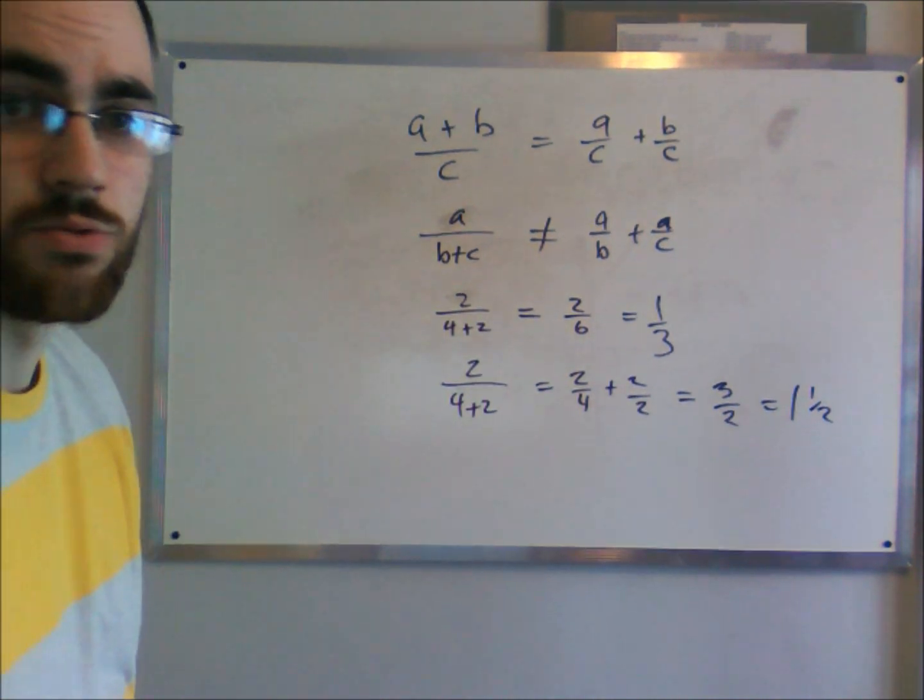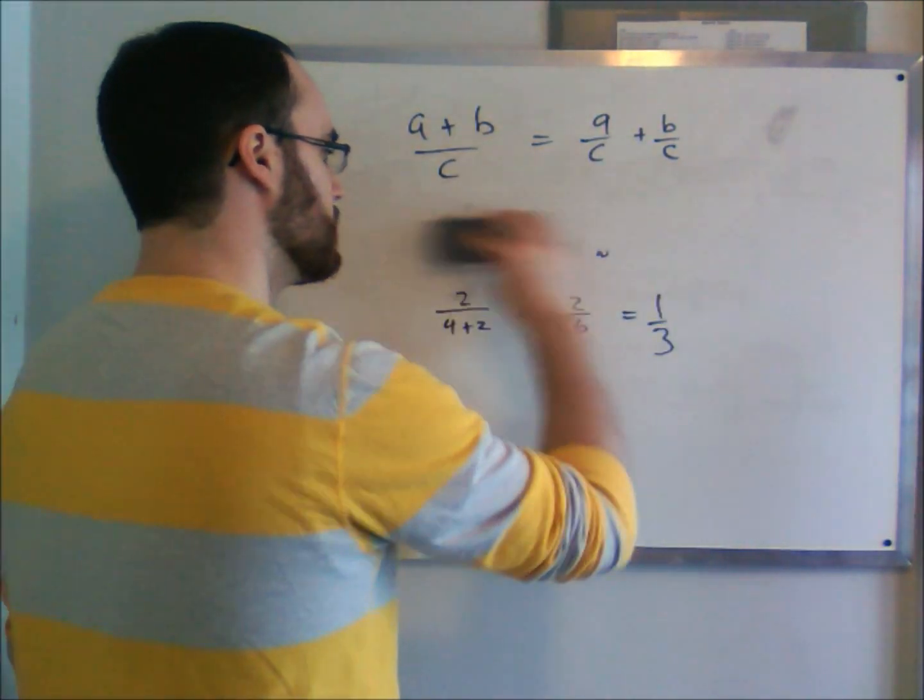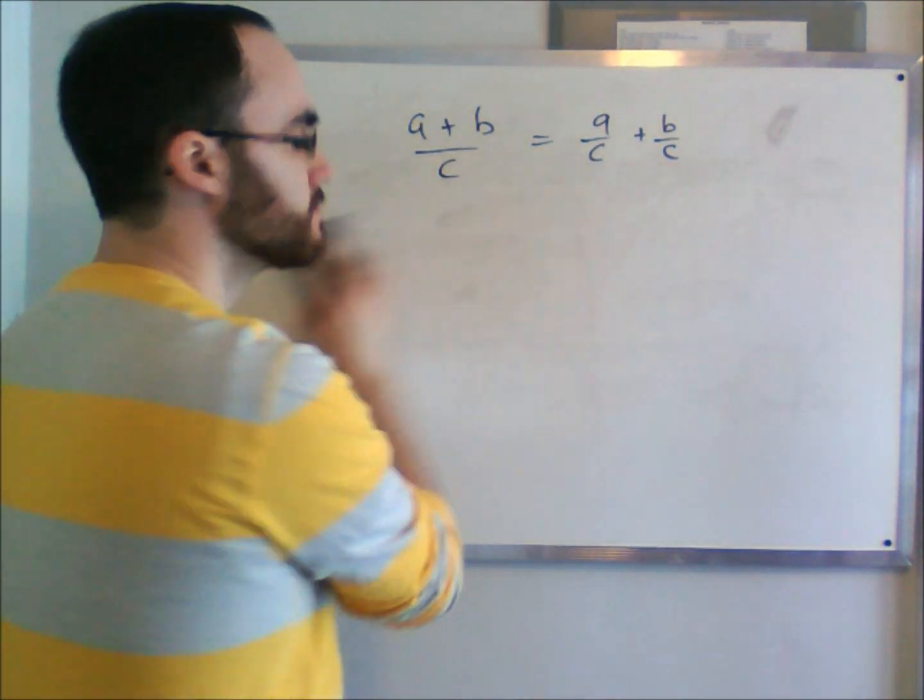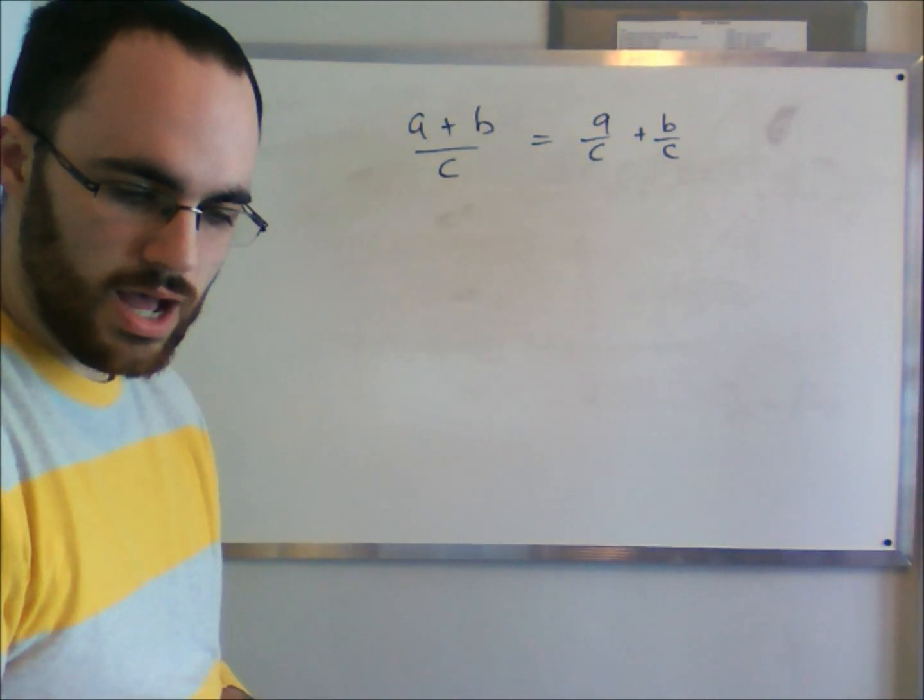Therefore, we know that this could never be the correct operation. So this is the wrong way to do it. This is the right way to do it. So that's one way.